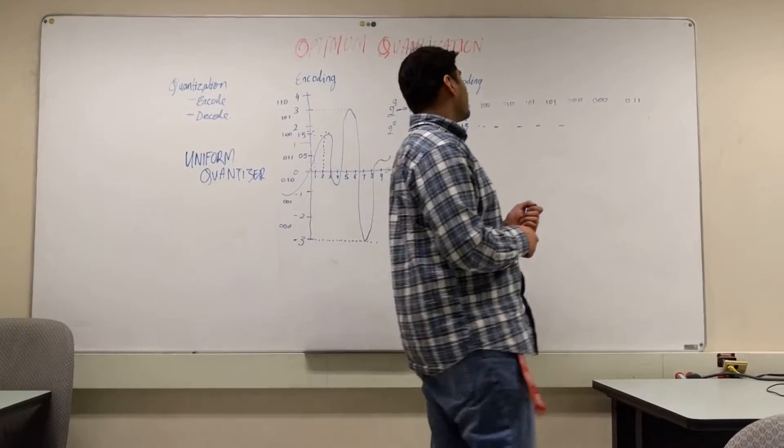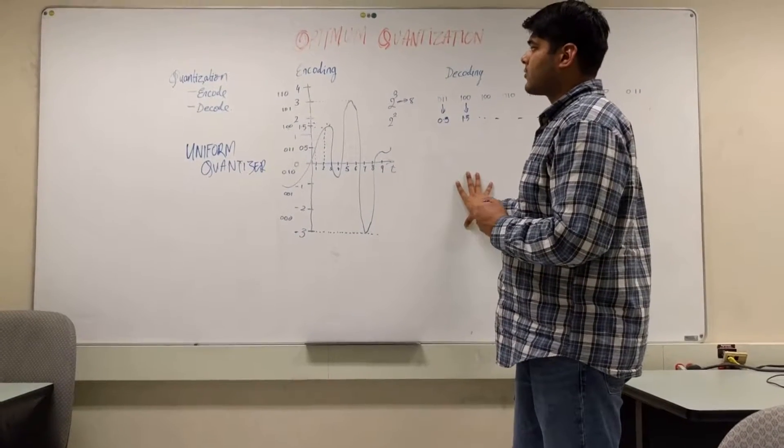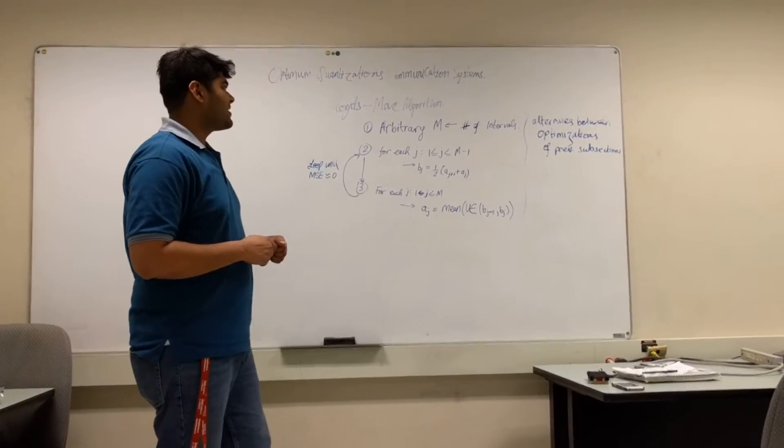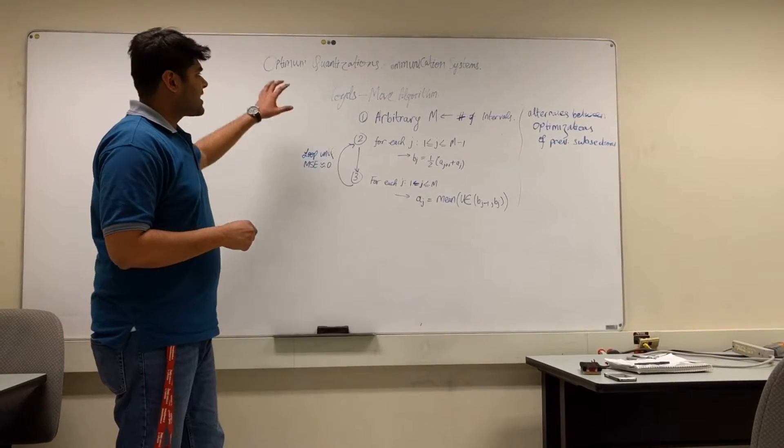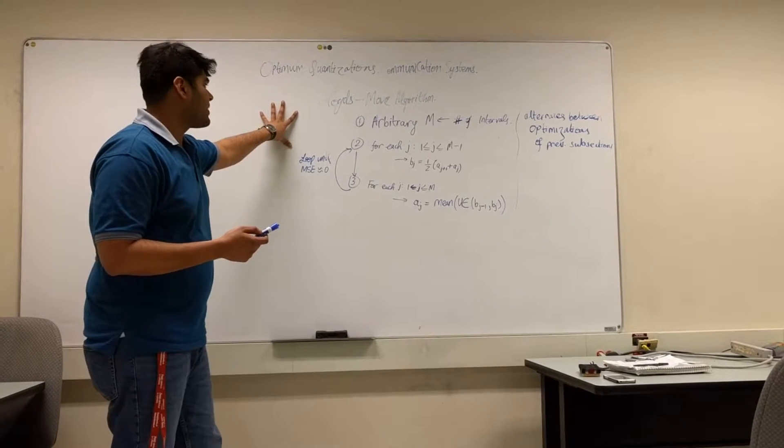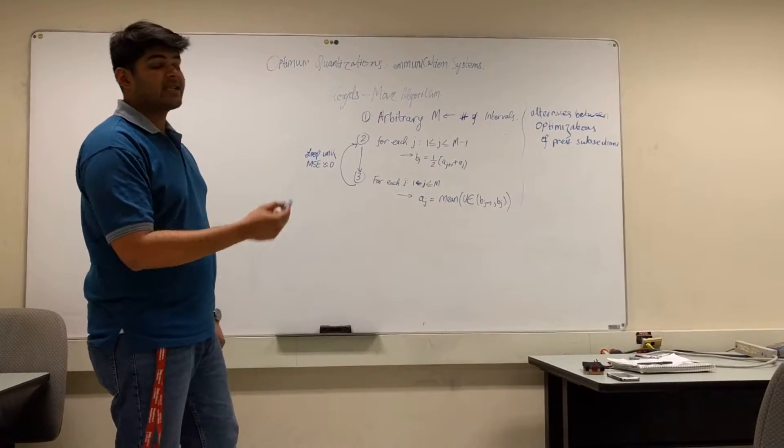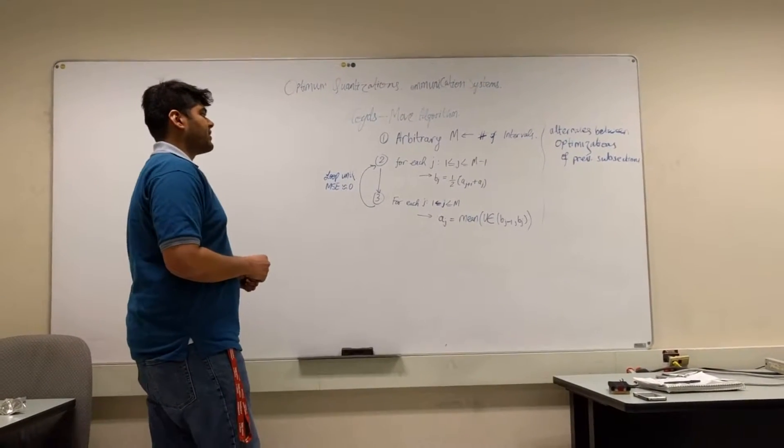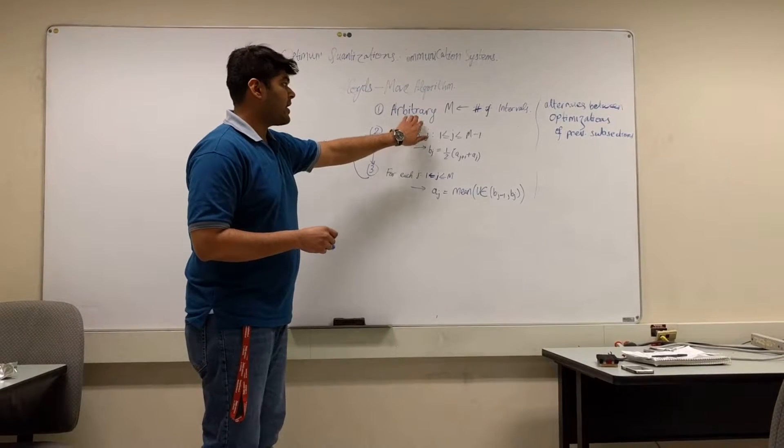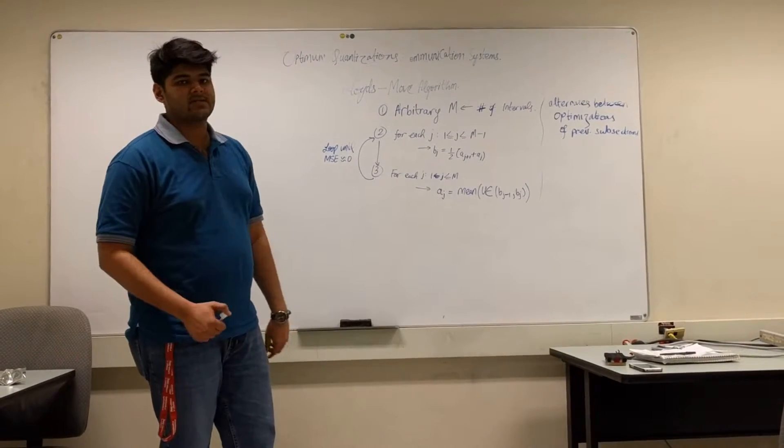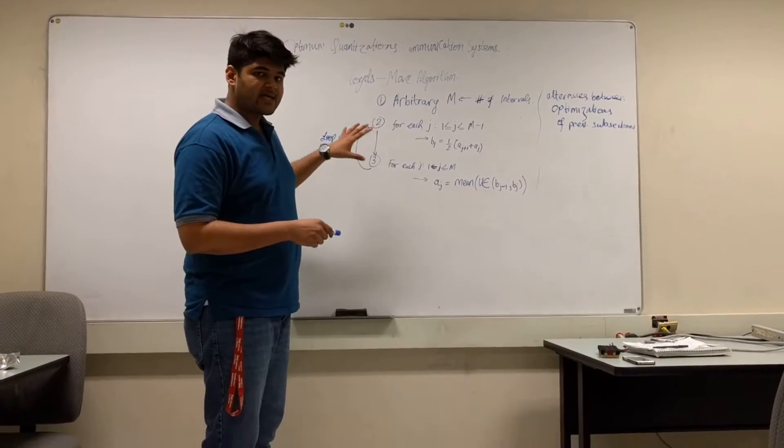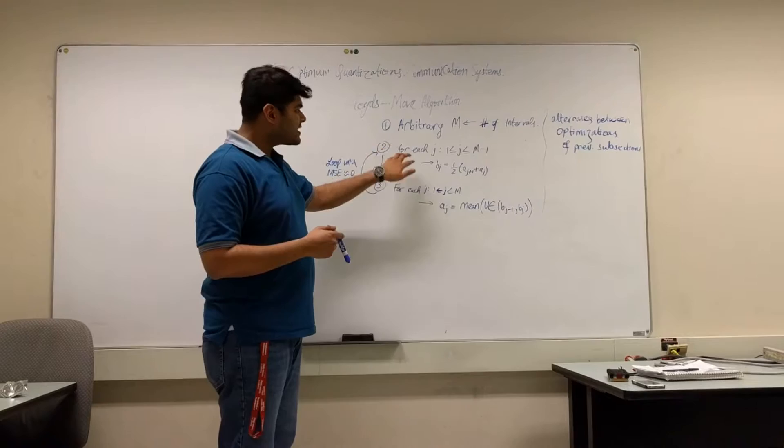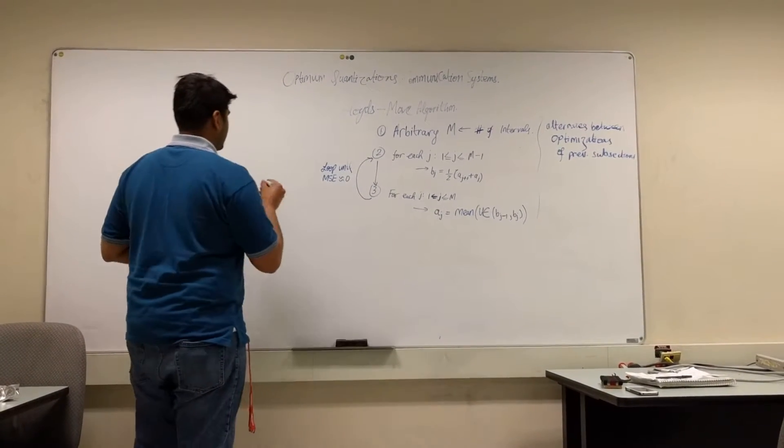Next, we shall be taking a look at an optimized technique for the quantizer, which is the Lloyd's algorithm. So, now we will be looking into the Lloyd's-Max algorithm. The Lloyd's-Max algorithm is an optimized quantization technique. The way it works is that it is an iterative and error-correcting algorithm. That's very important to remember. It has four steps. The first step is that you choose an arbitrary M, M being the number of intervals for you to expand for the signal. The second step is where exactly the iterative aspect of the algorithm kicks in.